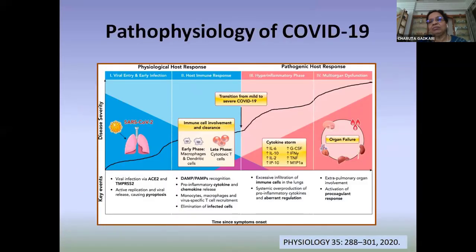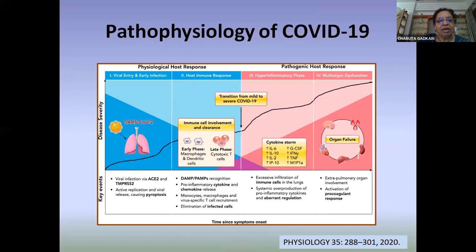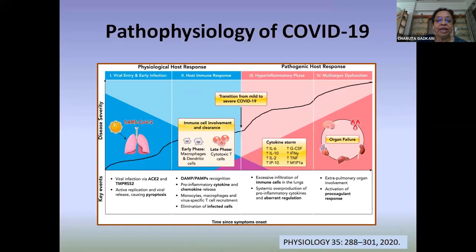Before we go to how to manage such patients, a little bit about the pathophysiology of COVID-19 — just a quick revision. The virus enters the body through the nasal or oral pathways and over time progresses to the lower respiratory tract, utilizing ACE2 receptors and TMPRSS2 for entry into the cell.